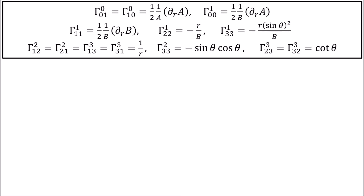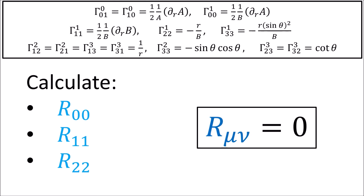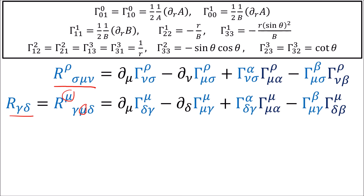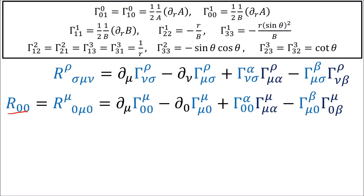Given these connection coefficients, we're now going to calculate the formulas for R00, R11, and R22. Our Einstein field equations tell us that all the components of the Ricci tensor are equal to zero. The Ricci tensor is just the Riemann tensor with its upper and lower middle indices summed together. For the 0,0 Ricci component, there are summations over mu, alpha, and beta, but many of these summation terms go to zero — we look at the non-zero connection coefficients to decide what survives.